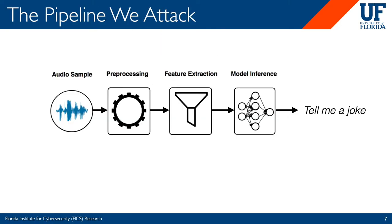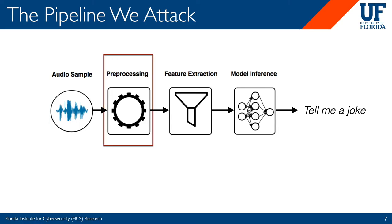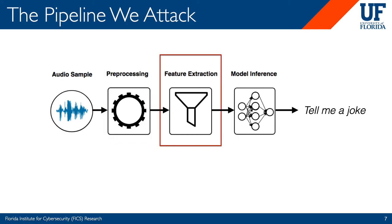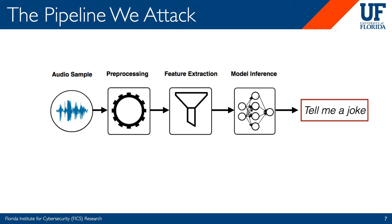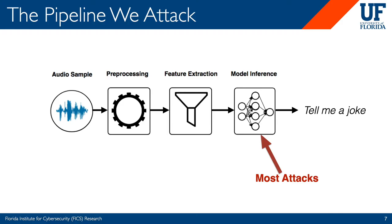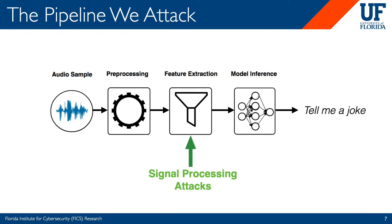Before talking about the attack itself, let's look at the voice system pipeline we'll be exploiting. We start with an audio sample passed to the pre-processing stage, where low-pass filters remove any high-frequency or rudimentary noise. The audio is then passed to the feature extraction phase, which is designed to emulate the human ear, using signal processing algorithms to extract features the human ear finds most important — known as feature vectors — which are then passed to the model to produce an output transcript. Rather than attacking the model inference stage, we attack the feature extraction phase, specifically the signal processing algorithms it uses.